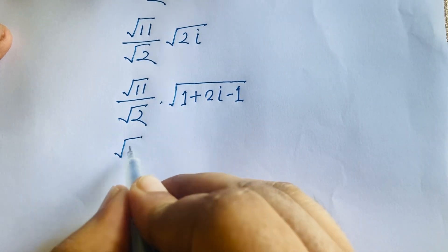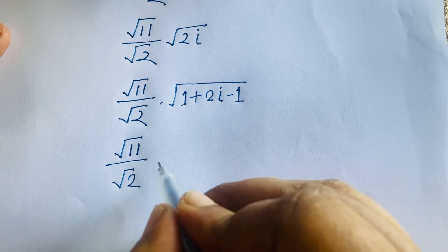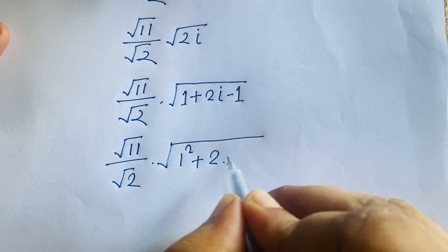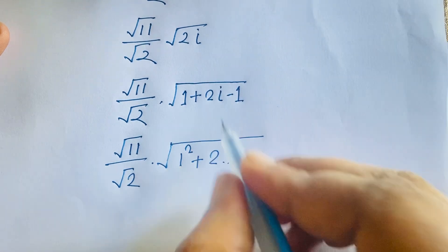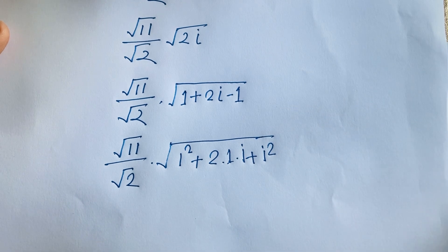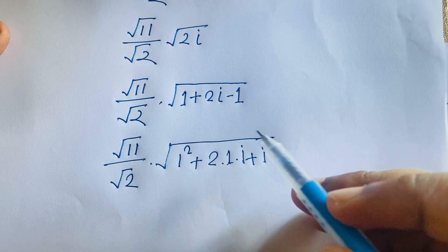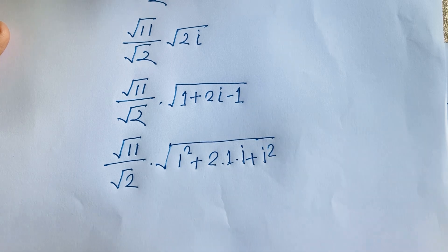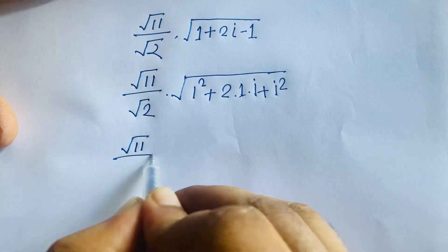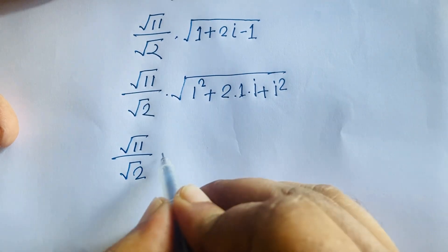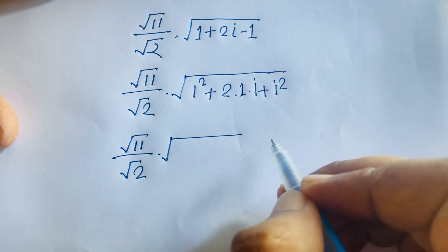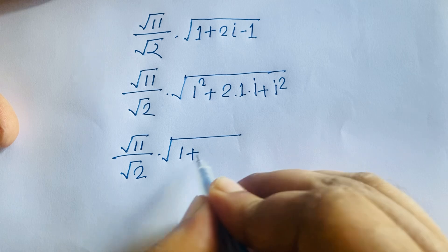Now I can write: square root of 11 over square root 2, times square root of (1 squared + 2 times 1 times i + i squared). According to complex number rules, i squared equals minus 1. This matches the identity a² + 2ab + b², which equals (a + b) whole squared — so here it is (1 + i) squared.